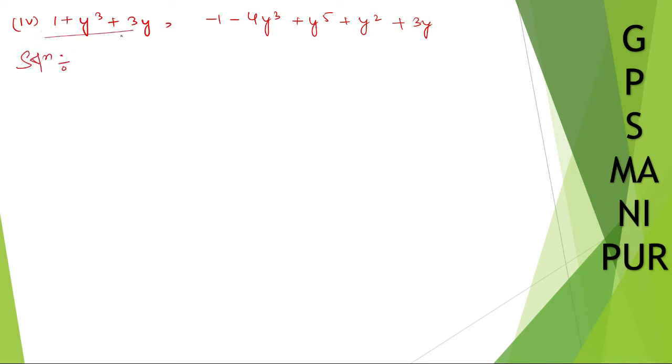Now write this in descending order. So descending order will be y cube plus 3y plus 1. I hope you know how to write down in descending order. Now this one you write down in descending order. The highest power is y to the power 5. Write down y to the power 5. Second is minus 4y cube. After that plus y square. After that 3y plus 3y. After that minus 1. Minus 1.